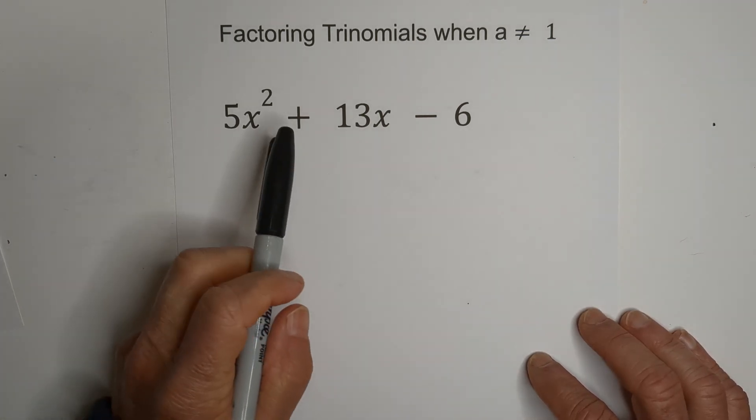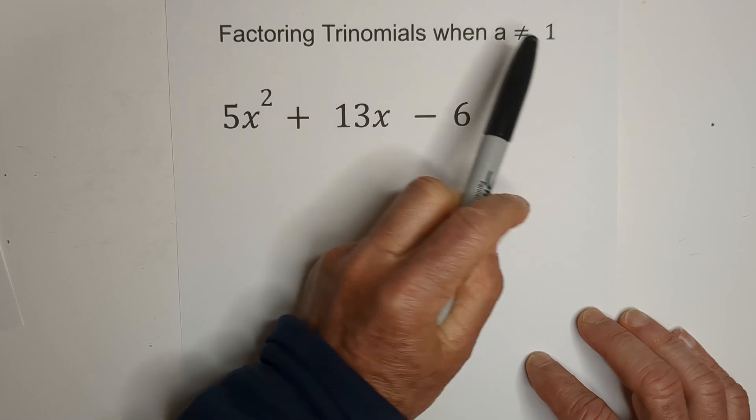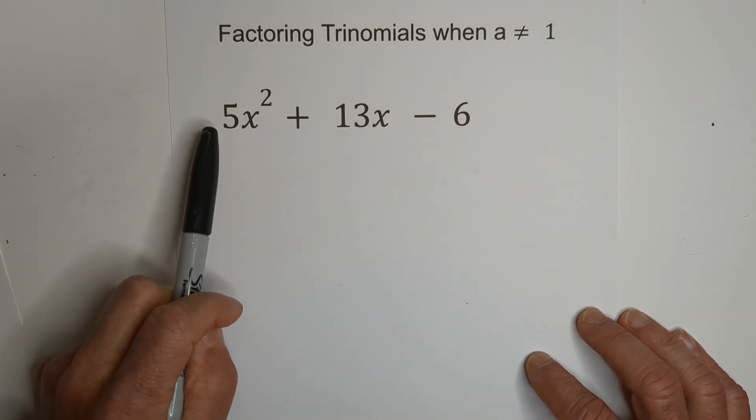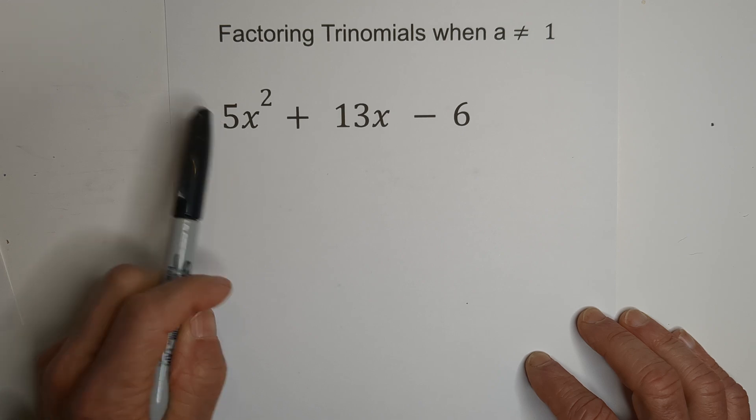Welcome to MooMooMath and Science. In this video, let's go over factoring trinomials when A is not 1. If you look at this trinomial, you'll notice that this first term is definitely not a 1, it's a 5.